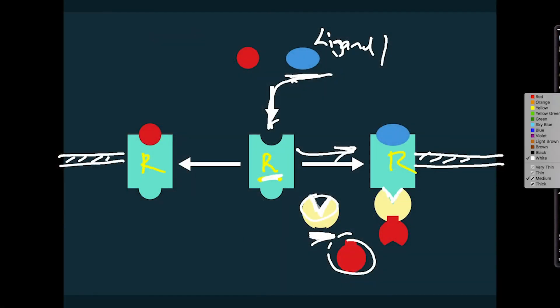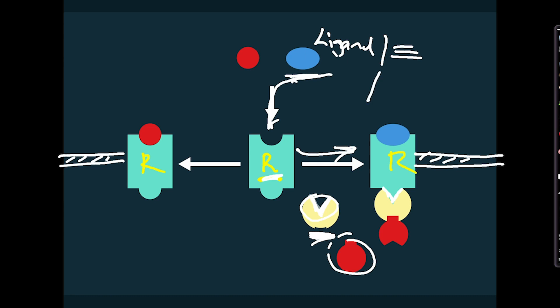So ligand one in this case seems to be activating the receptor — so we give it a special name: we call ligand one an agonist. An agonist is a ligand that not only binds to a receptor but activates it, meaning it activates some kind of signaling pathway inside the cell. Next time we'll see that 'activates' is a vague word and could mean many things — we're going to talk about exactly what it means and how that meaning can differ depending on the agonist.